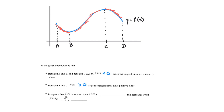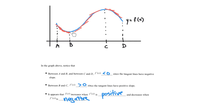We can say that the function f of x increases when f prime of x is positive, and decreases when f prime of x is negative. This gives us information about the relationship between the derivative and the function itself. The function increases when the derivative is positive — between B and C the slope is positive so the function is increasing — and decreases when the slope is negative.